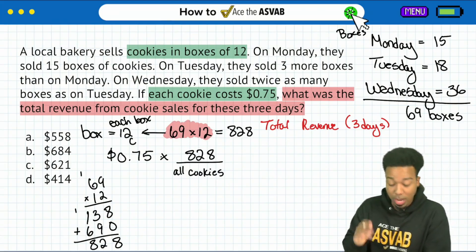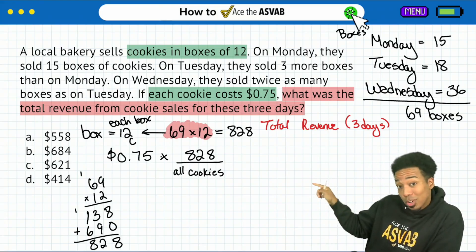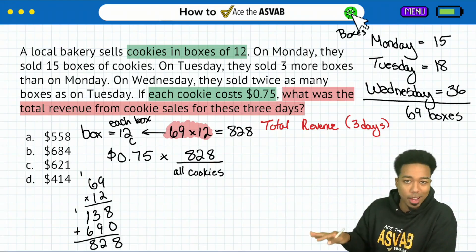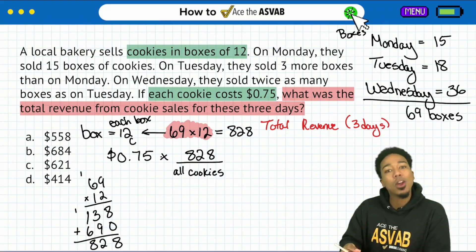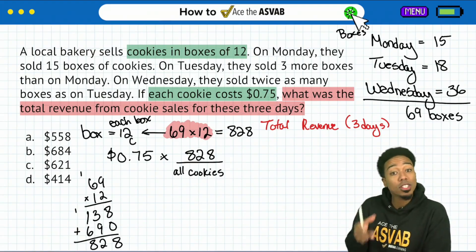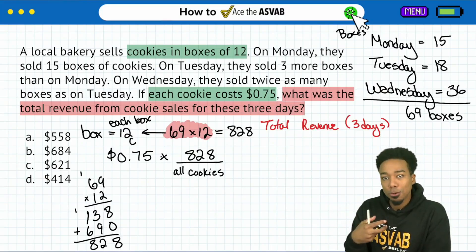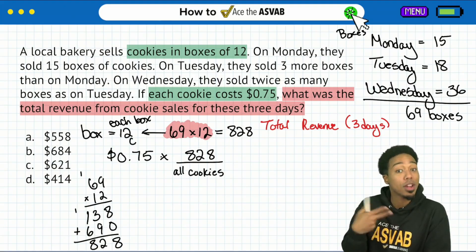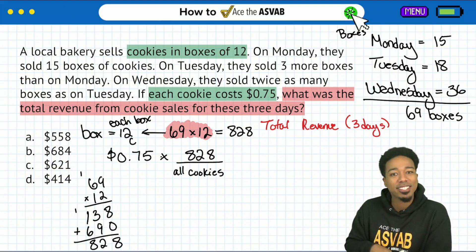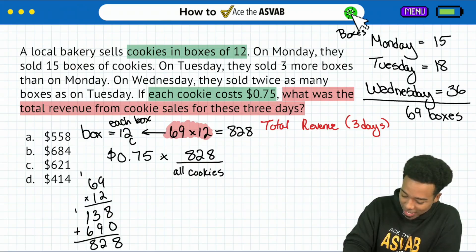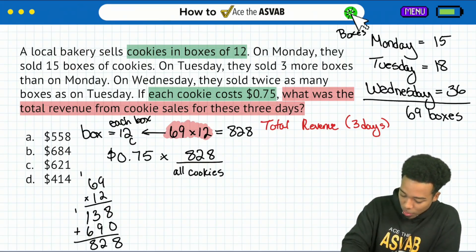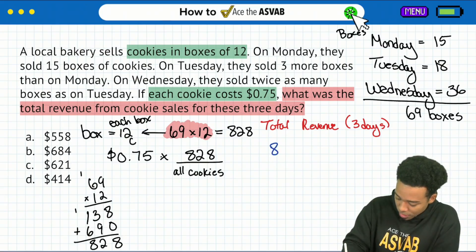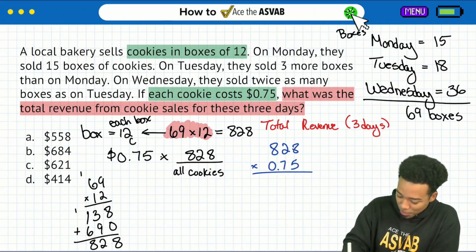We are not done yet. Be careful because 828 was one of the answers — you might think you're done. But remember, we're looking for the revenue, not the number of cookies. We know that for every cookie it's 75 cents. So let's go ahead and do 828 multiplied by 75 cents per cookie.